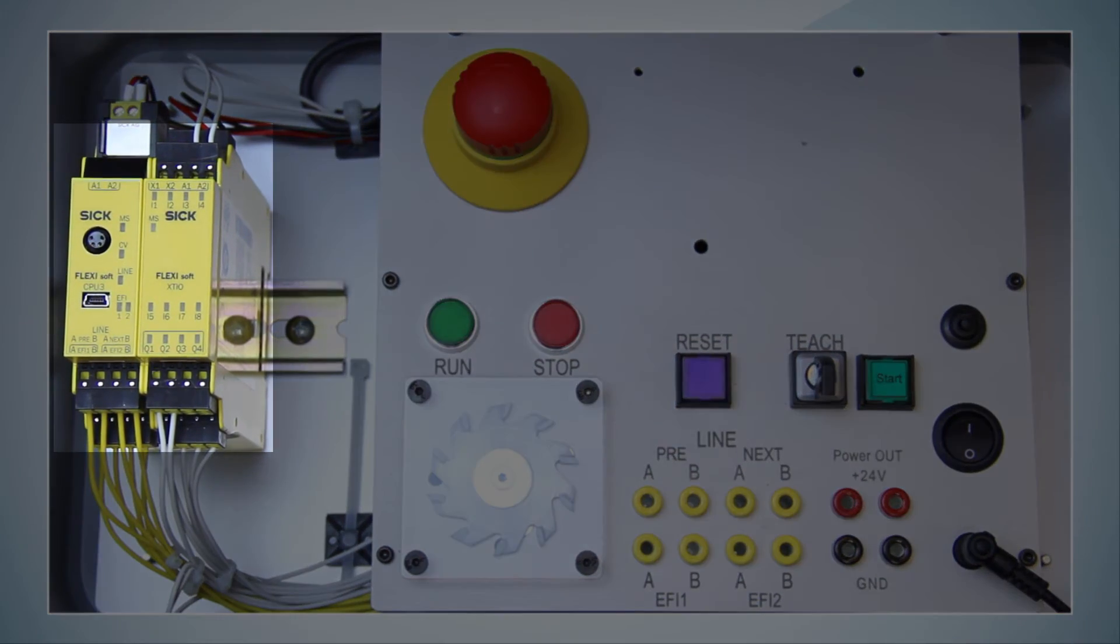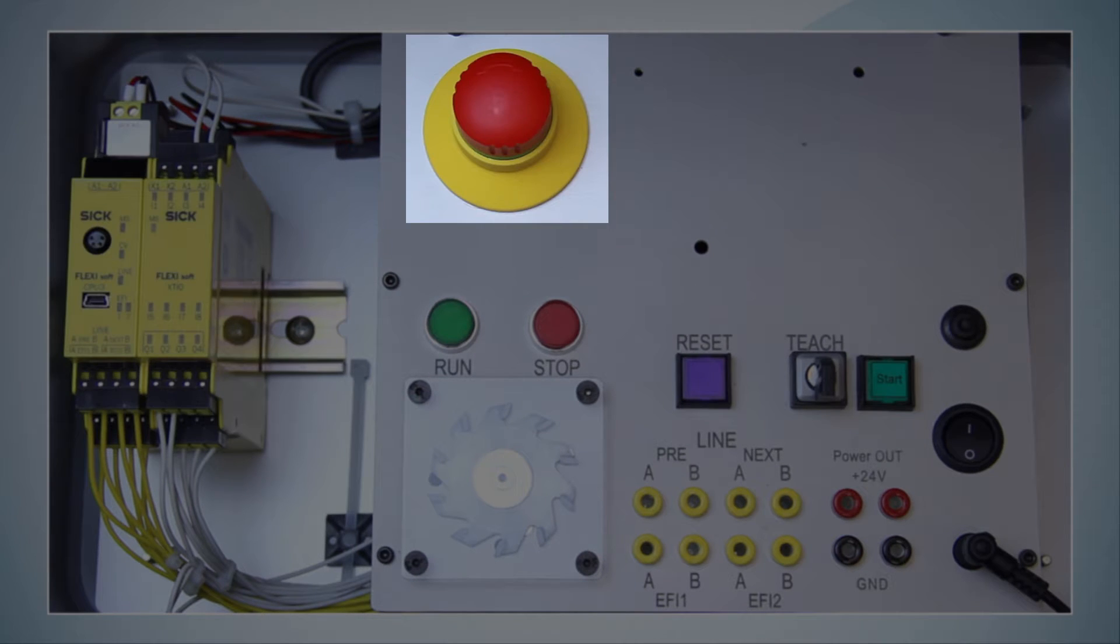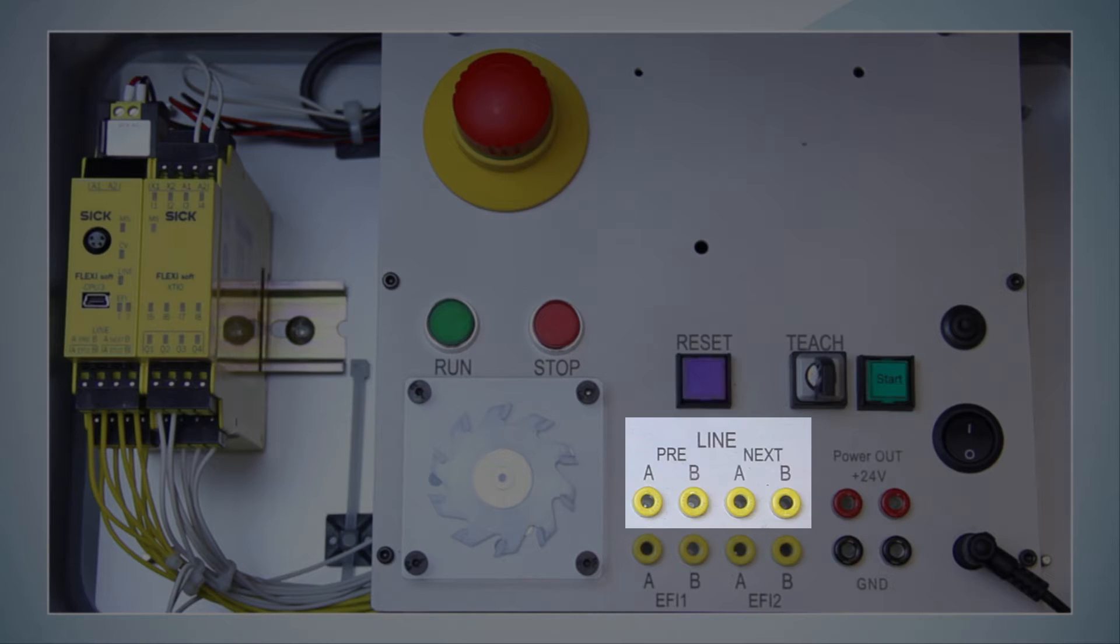Here we have our CPU3 and the XTIO module. Here is an e-stop. Here are start and reset buttons. Here are the Flexi-Line terminals to the previous and the next station. And here is a teach switch which I will explain in the next video.